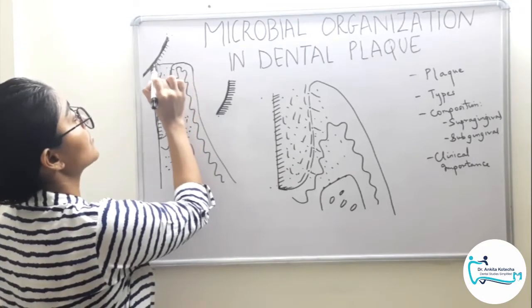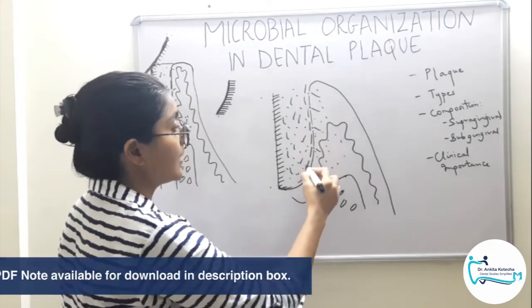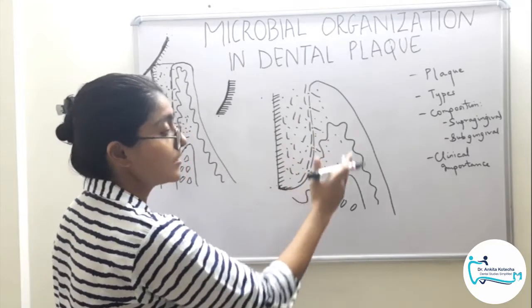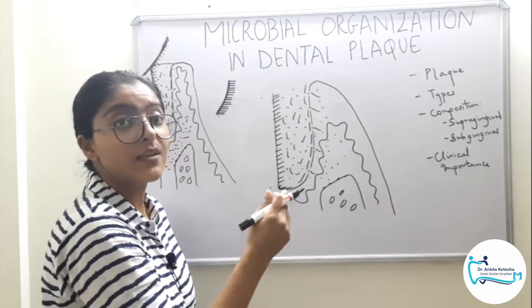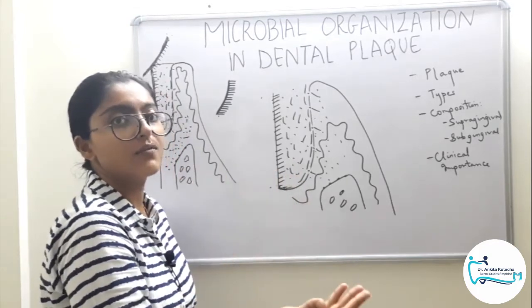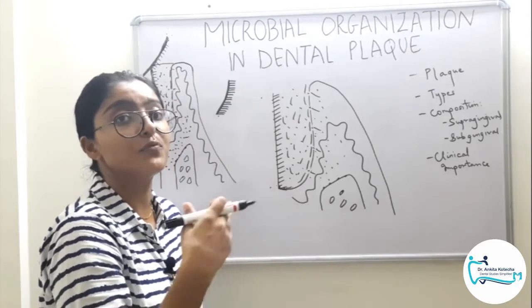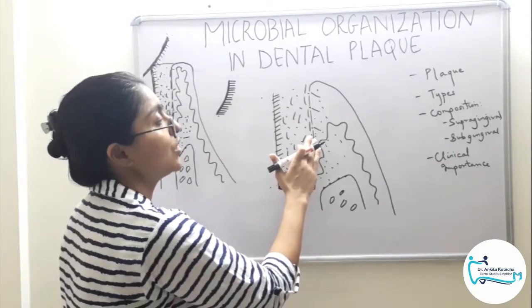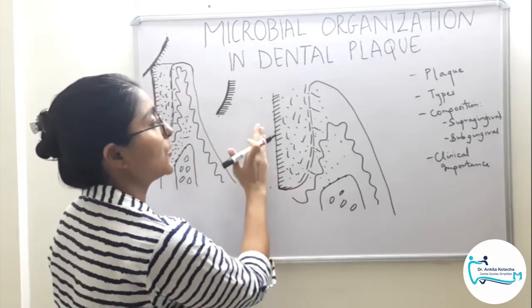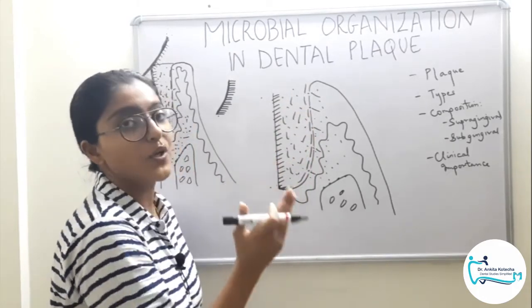The clinical importance of understanding this microbial organization is that different plaque types have different clinical implications. Supragingival plaque and root-associated subgingival plaque are responsible for calculus formation and caries, especially root caries. Marginal plaque is responsible for causing gingivitis, precisely marginal gingivitis. Tissue-associated plaque is the main culprit of periodontal disease, as it is in direct contact with host tissues, causing host tissue destruction through invasion and evasion of host defense mechanisms, leading to periodontal diseases in different clinical forms and presentations.